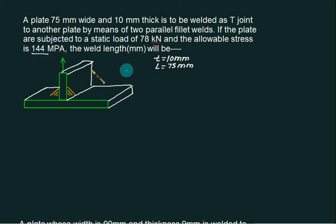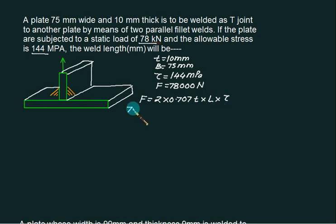The strength is 144 megapascals and load is 78 kilonewtons, which is 78,000 Newtons. F equals 2 times 0.707 times T multiplied by length L on each side, multiplied by tau. So 78,000 equals 2 times 0.707 times 10 times L times 144. The length of weld is 38.3mm, which can be comfortably done because the width available is 75mm.